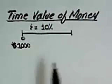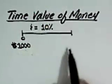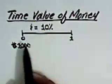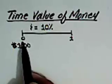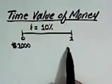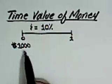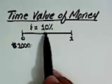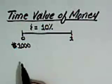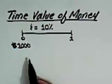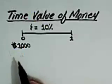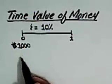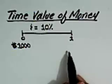Now the question is how much this money would become at the end of one year. We have this one thousand at time zero and we want to know how much money would be in our bank account if we deposit this one thousand in a bank account which pays an annual compound interest rate of ten percent. By using our future value formula that we learned in the last video, we can calculate the future value of this one thousand at the end of one year.